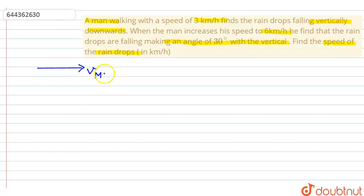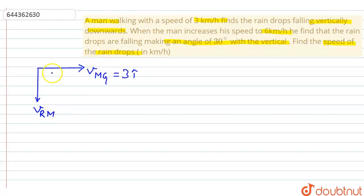Let us say this is the direction in which the man is traveling. The velocity of the man with respect to the ground is 3 i-cap. With respect to the man, the rain is falling vertically — this is the velocity of rain with respect to the man. The resultant actual velocity of rain will be in this direction making an angle theta with the vertical.